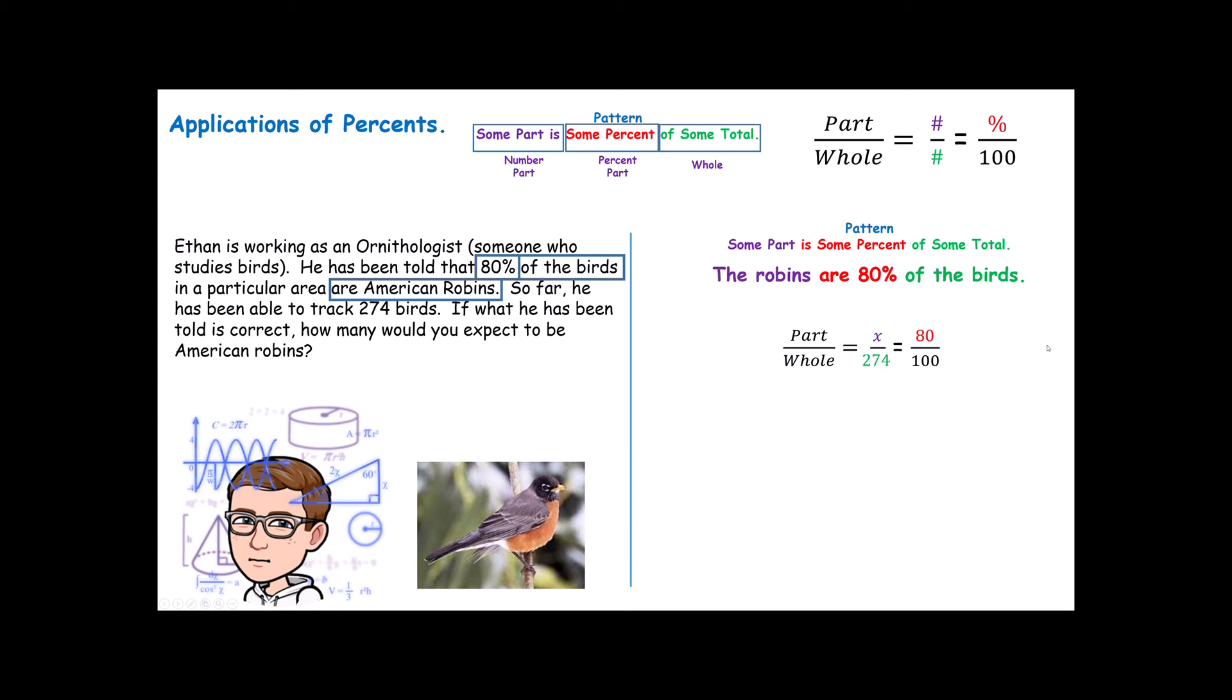Everything else is always going to be the same. Means Extremes property. Multiply those together. Divide by 100. And you get 219.2. Now, we can't really have .2 of a bird, so we would say he would expect there to be about 219 American robins. Once the numbers are in the right spot, once we know what the part and the whole are in our story, it should be very easy to solve these. That's why I like doing percent problems as proportions.